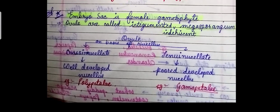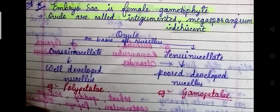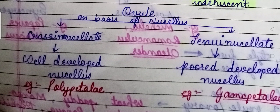On the basis of nucellus, the ovule is divided into two types: crassinucellate — having a well-developed nucellus, example is Polypetalae — and tenuinucellate, which has a poorly developed nucellus.